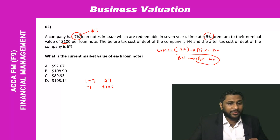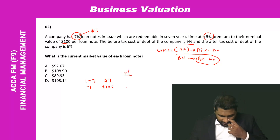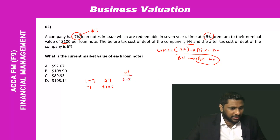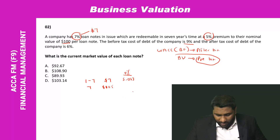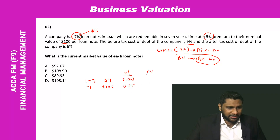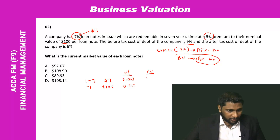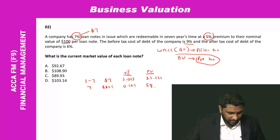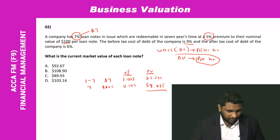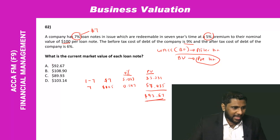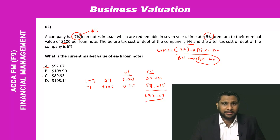Using the 9%, 7-year annuity factor of 5.033 and the 9%, 7-year discount factor of 0.547: the present value of the annual payments is 7 × 5.033 = 35.231, and the present value of the redemption amount is 105 × 0.547 = 57.435. The total market value is 35.231 + 57.435 = £92.67, which is answer A.